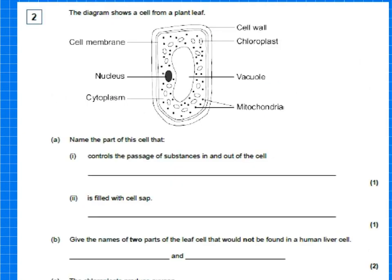This second question shows a cell from a plant leaf. So it's a plant cell. It says, name the part of this cell that controls the passage of substances in and out of the cell. Well, we know that to be the cell membrane. And then the second one is filled with cell sap. Well, that will be vacuole.